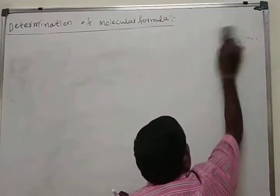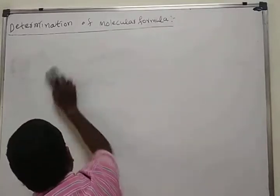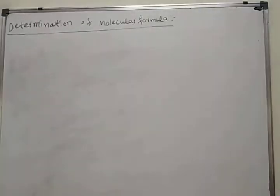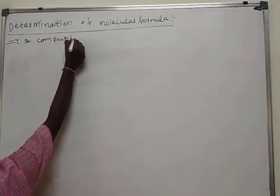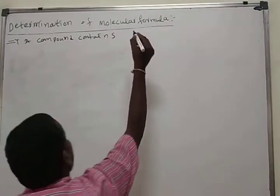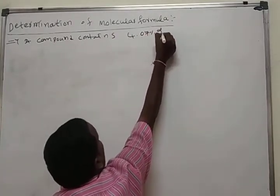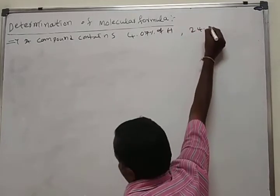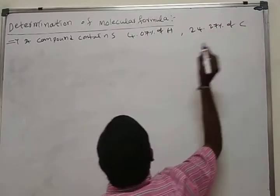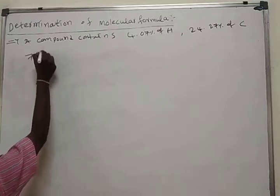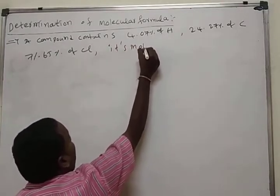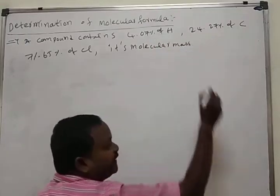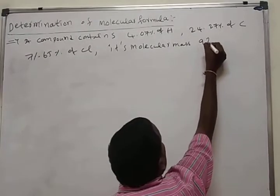This is a compulsory 3-mark question for PUC, and important for NEET, CET. The problem: a compound contains 4.07% hydrogen, 24.27% carbon, and 71.65% chlorine. Its molecular mass is 98.96. Determine the empirical formula and molecular formula.